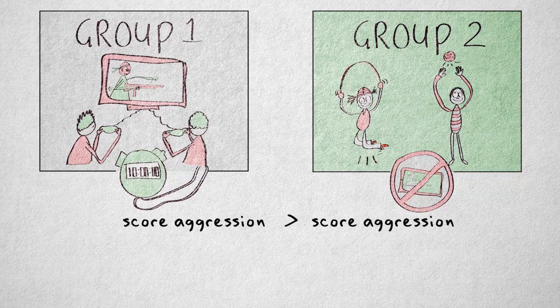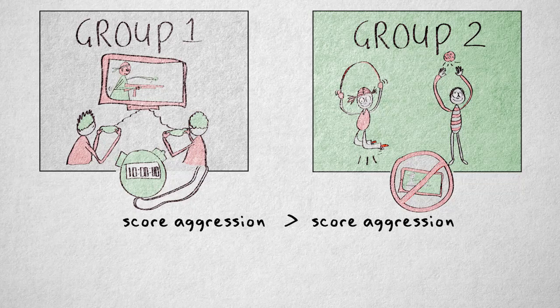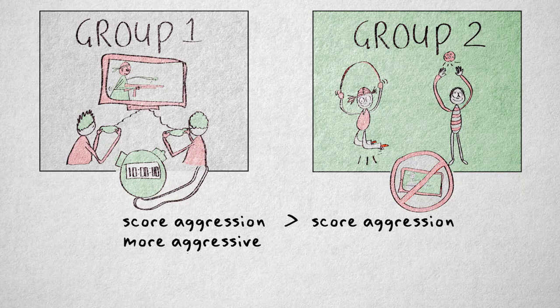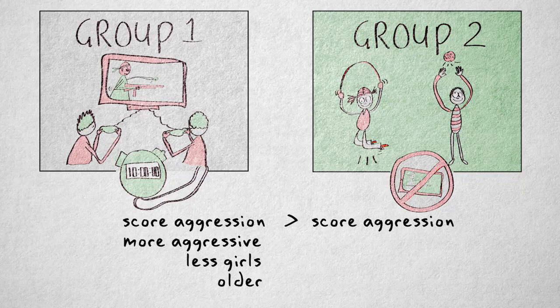Of course, it's not a very strong case, since there are still many alternative explanations for the difference in aggression between these two groups. What if the kids in the video game group were more aggressive to start out with? What if there were fewer girls in this group, or more older children?